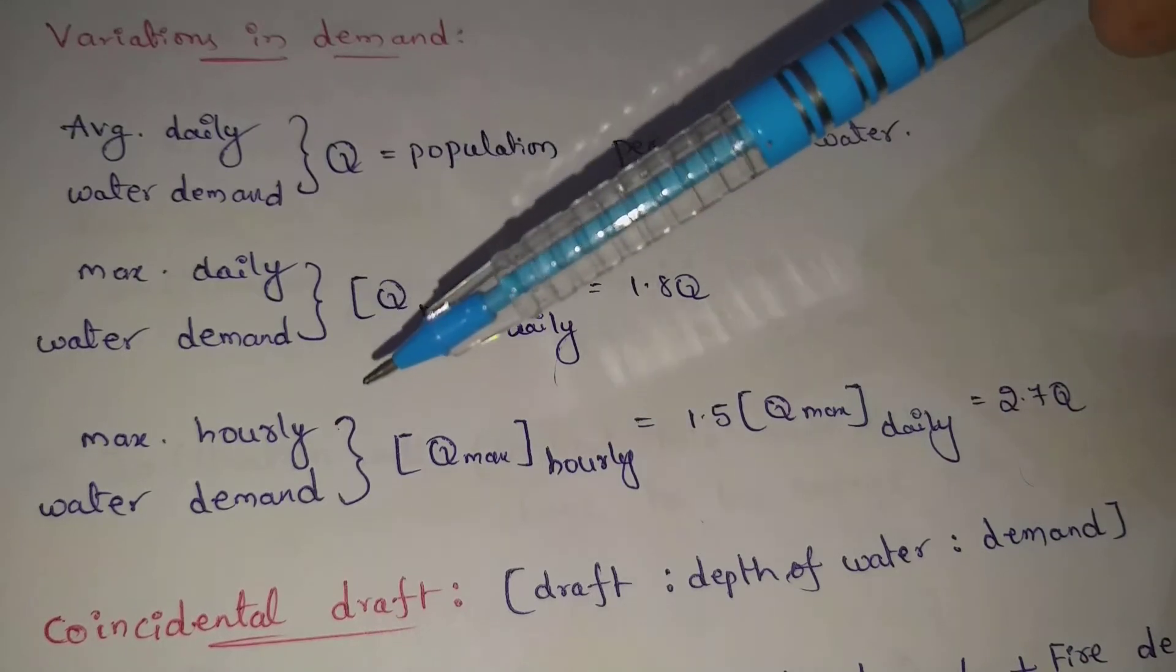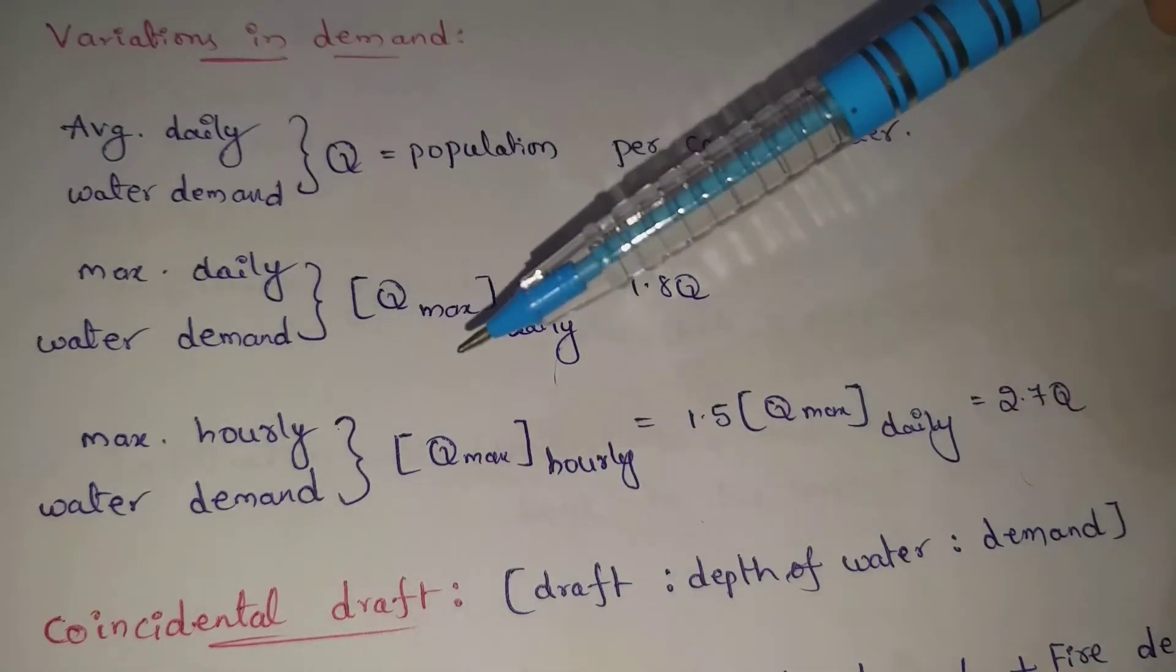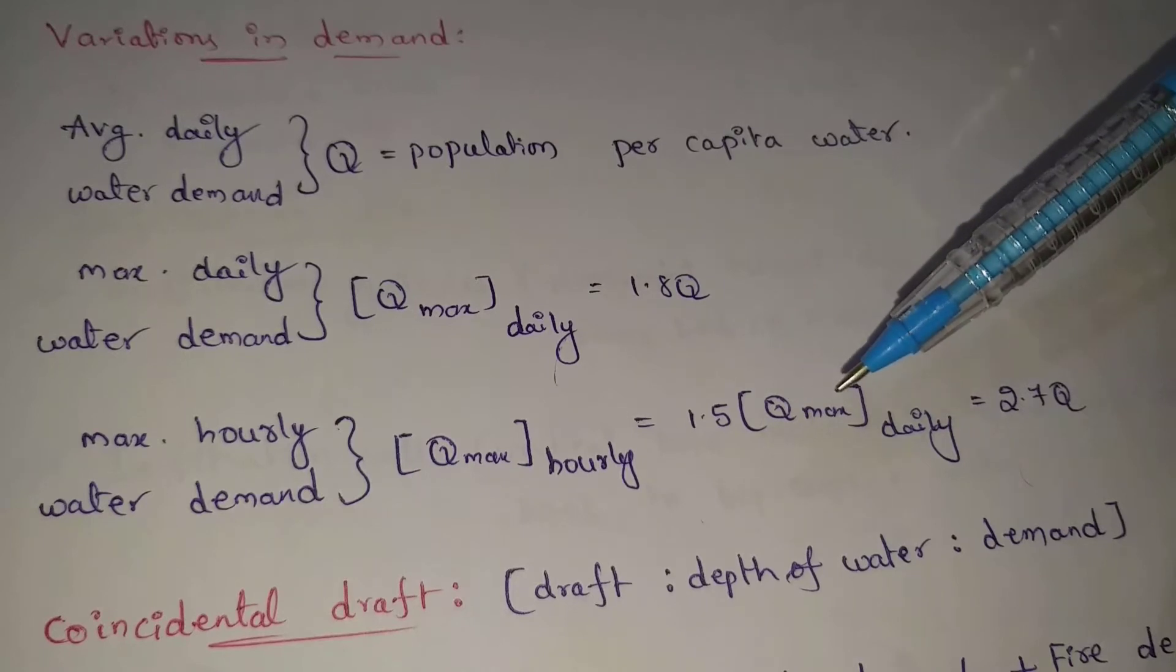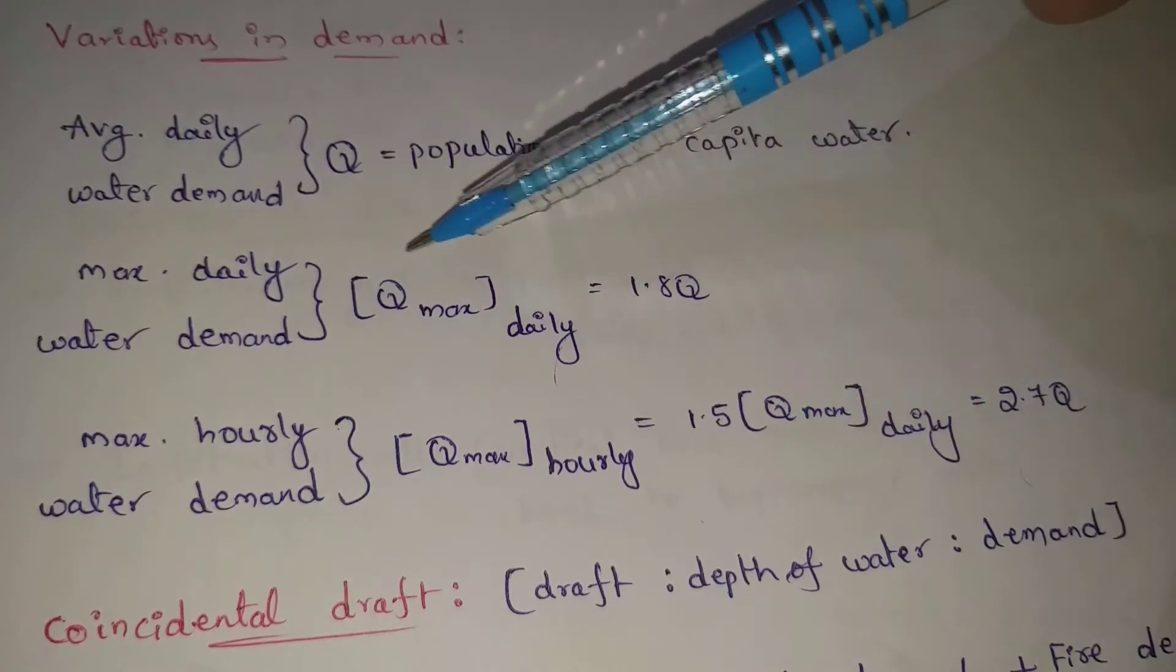Maximum hourly water demand: Q max hourly equals 1.5 into Q max daily.